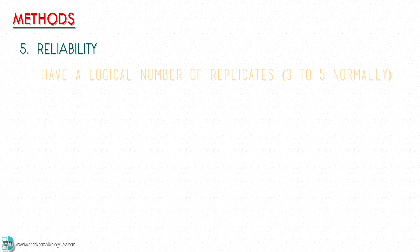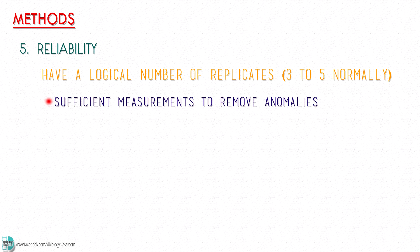Number five, reliability. Mention that you will have a logical number of replicates to get sufficient measurements to remove anomalous results and to obtain the mean value.